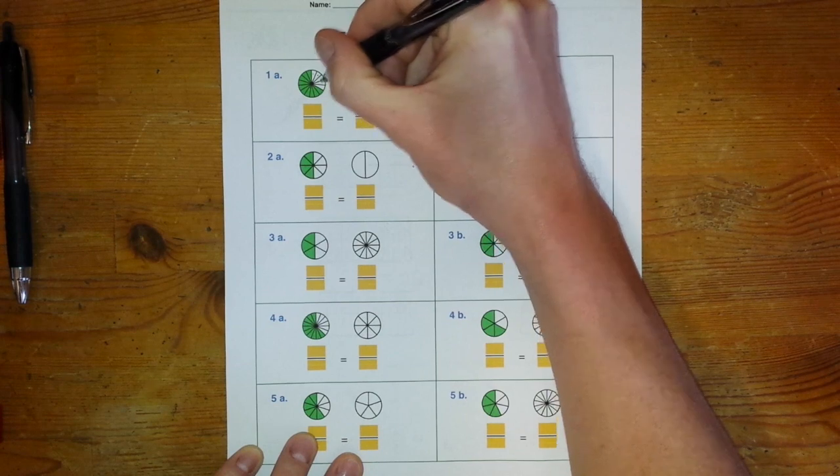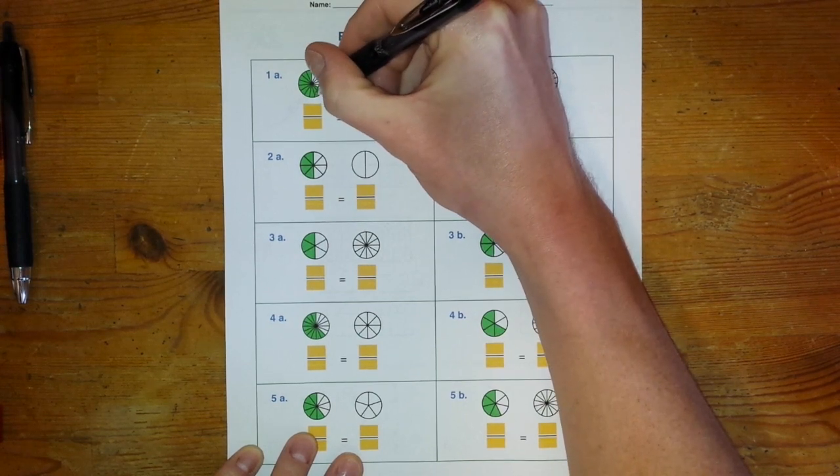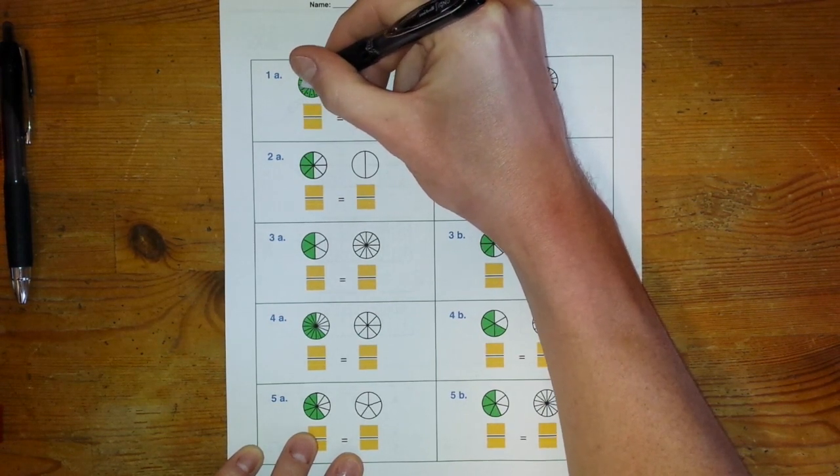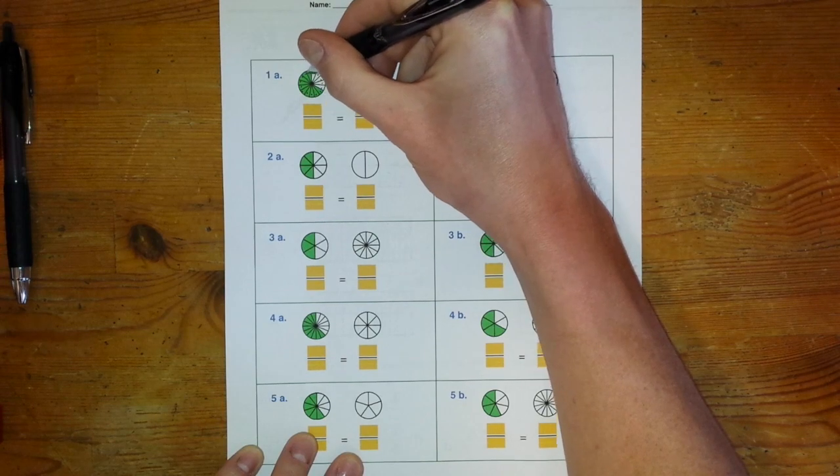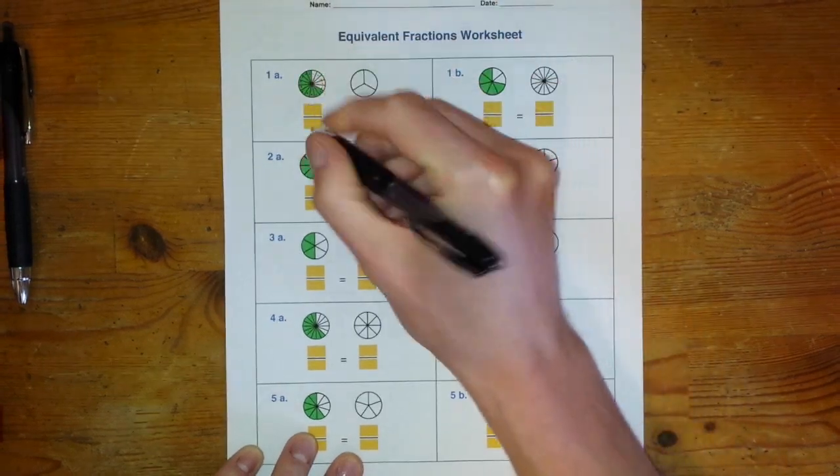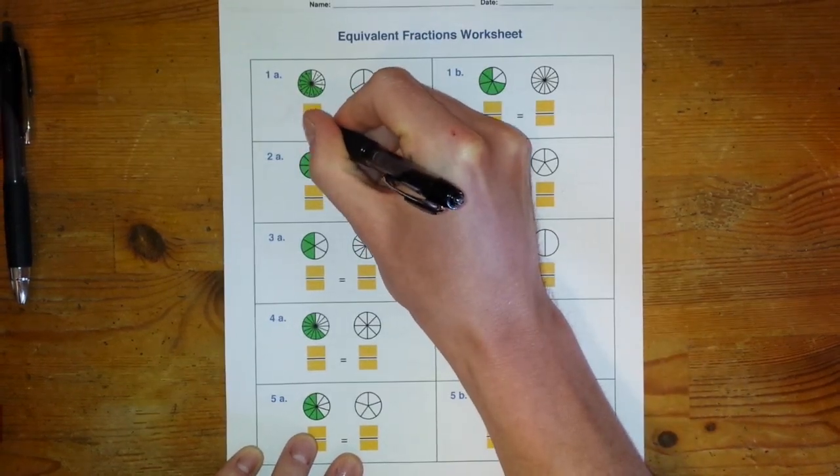We've got one, two, three, four, five, six, seven, eight, nine, ten, eleven, twelve, thirteen, fourteen, fifteen. So we know that we're talking about fifteenths.